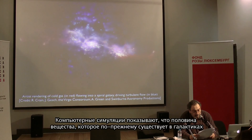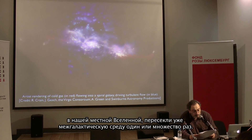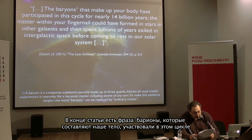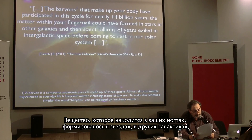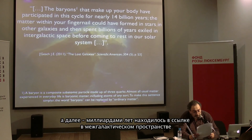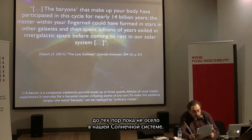Computer simulations suggest that half of the matter currently present in galaxies of the local universe has crossed the intergalactic medium one or many times. At the end of the article, there is this sentence: 'The baryons that make up your body have participated in this cycle for nearly 14 billion years. The matter within your fingernails could have formed in stars in other galaxies and then spent billions of years in this exciting intergalactic space before coming to rest in our solar system.' A baryon is a composite subatomic particle made up of three quarks. Almost all usual matter is baryonic matter, which includes atoms of any sort — the term baryons can be replaced by ordinary matter.